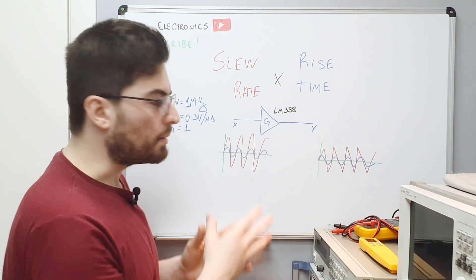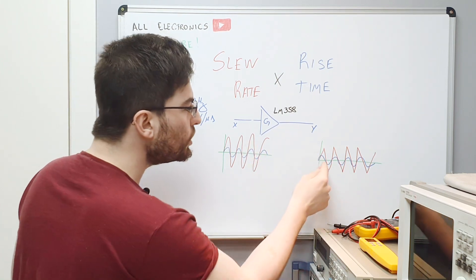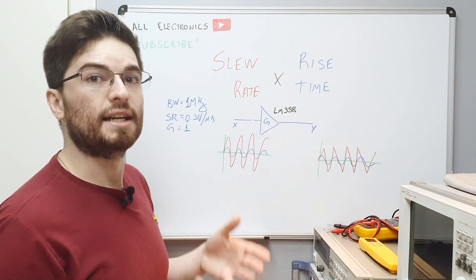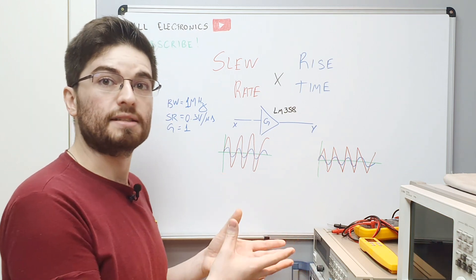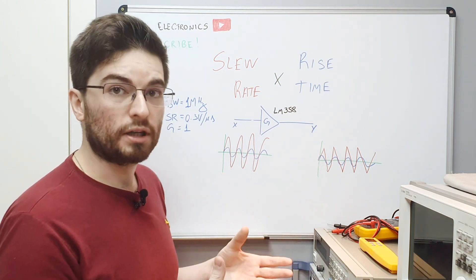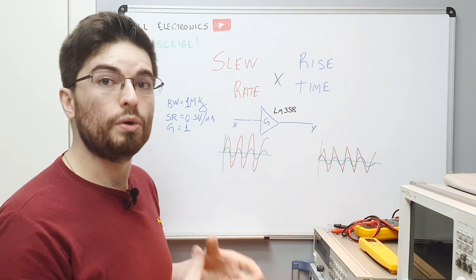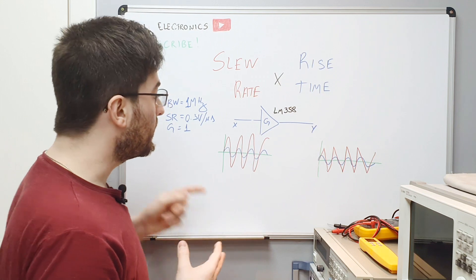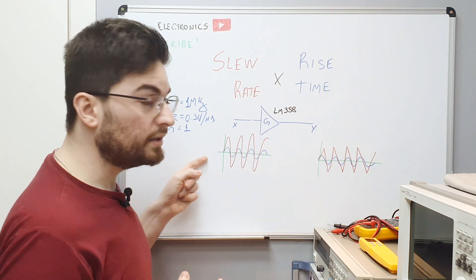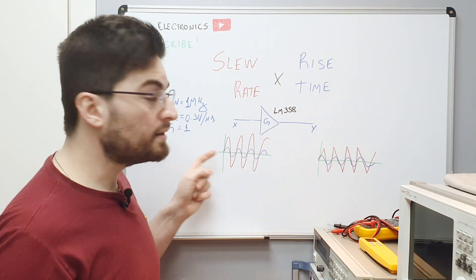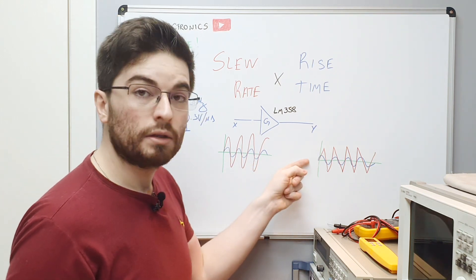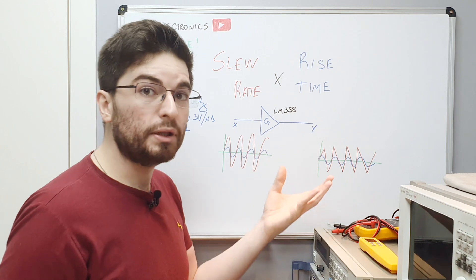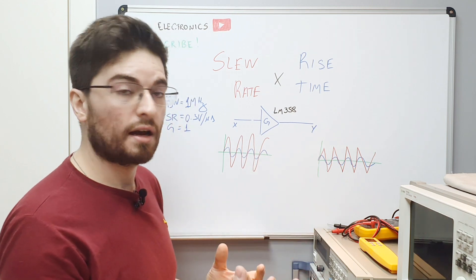The harmonic distortion now is greater than zero. In an ideal linear system, the harmonic distortion will always be zero, because any sinusoidal signal that enters will appear at the output with amplitude or phase altered.